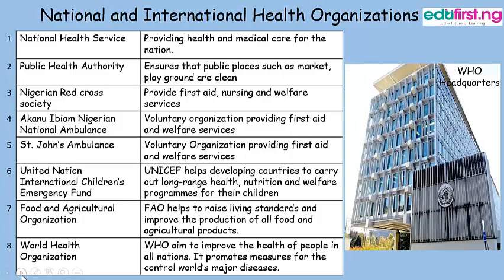Three international health organizations are: UNICEF, which helps developing countries to carry out long-range health, nutrition, and welfare programs for their children; FAO, which helps to raise living standards and improve the production of all food and agricultural products; and WHO, which aims to improve the health of people in all nations and promotes measures for the control of the world's major diseases.